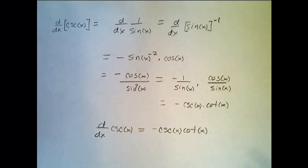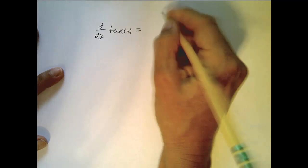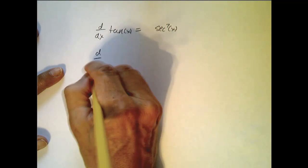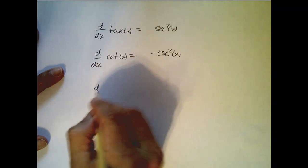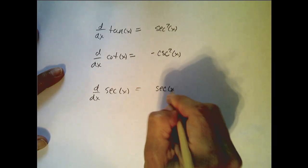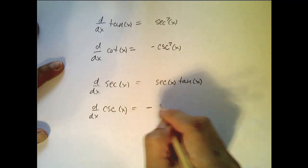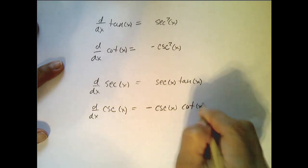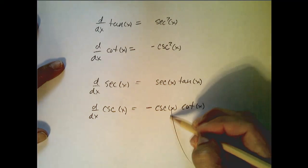Now to summarize and remember: d/dx of tan x is secant squared of x. d/dx of cotangent x is negative cosecant squared of x. d/dx of secant x is secant x tan x. d/dx of cosecant x is negative cosecant x cotangent x. You either need to know these or be able to derive them by the methods we just showed. Now go practice.